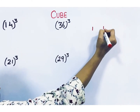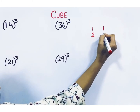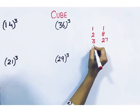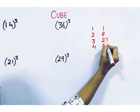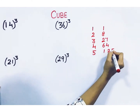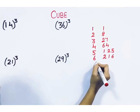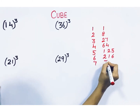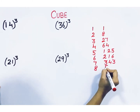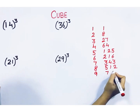First, 1 cube is 1. Then 2 cube is 8. 3 cube is 27. 4 cube is 64. 5 cube is 125. 6 cube is 216. 7 cube is 343. 8 cube is 512. And 9 cube is 729.